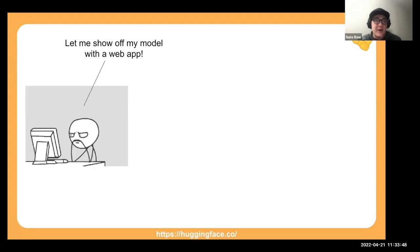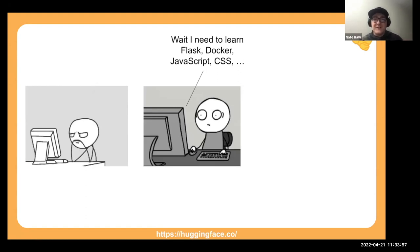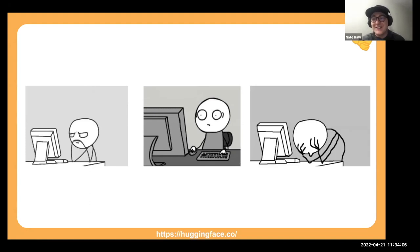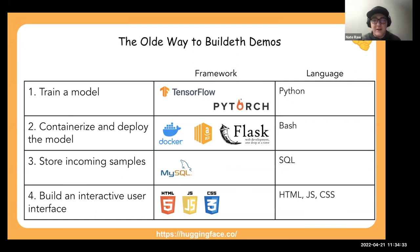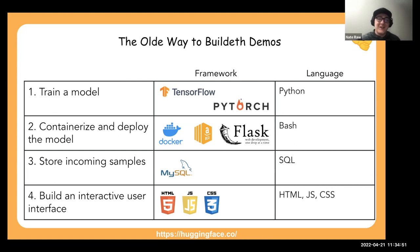Usually when you go to build a demo, the process goes like this: you've got this awesome model you trained, and now you want to build a web app. Then you realize you have to learn Flask, Docker, JavaScript, CSS, bash, and all sorts of tools — and then you kind of give up. There's a ton of different tools you have to learn across the whole life cycle of building a machine learning app. You trained your model in TensorFlow or PyTorch, then you need bash and Docker to containerize it, Flask for the back end, HTML, CSS, and JavaScript for the front end, maybe MySQL for data. It takes a long time.